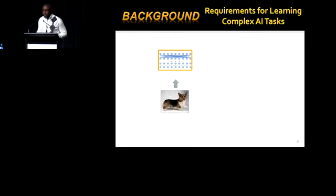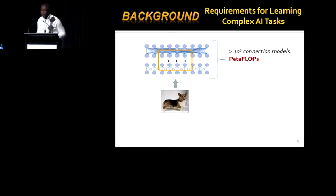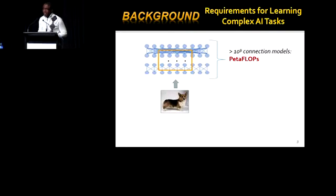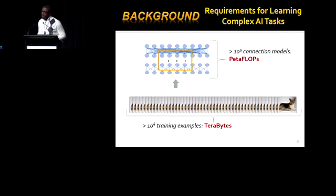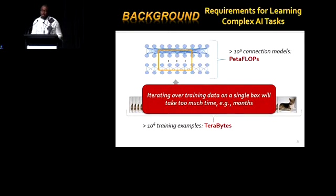However, to recognize high-resolution images, that requires DNN models that are significantly larger — potentially with billions of parameters that need to be trained. Training such large models typically requires a large amount of data as well. At this scale, training such models is really impractical on a single machine, simply because it might take a long time to even iterate over the training data.